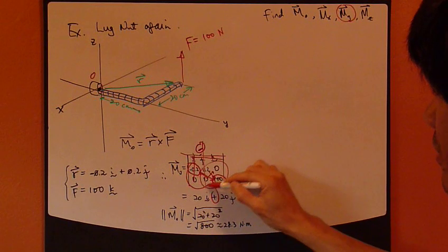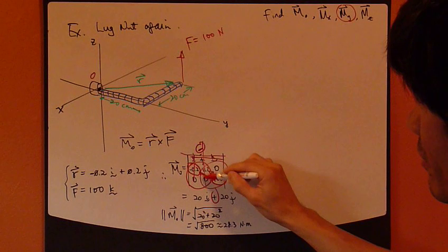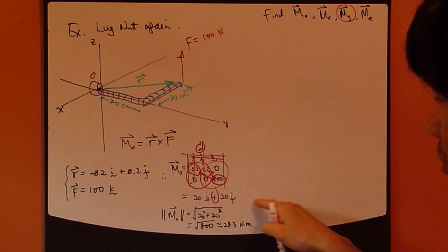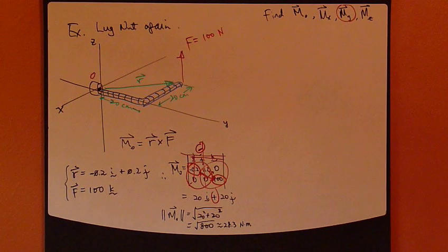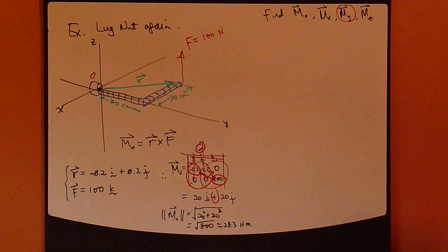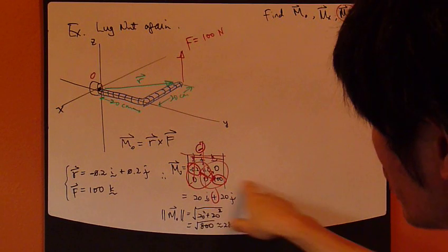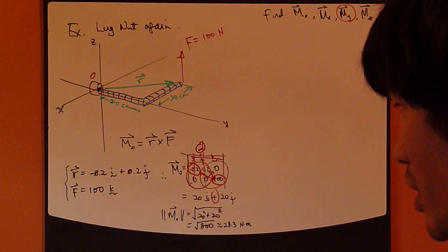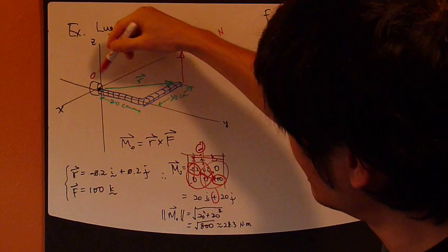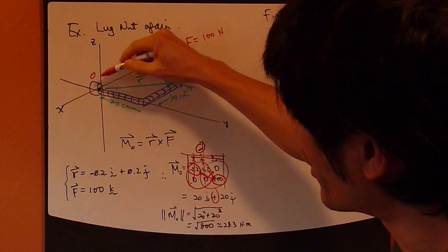And then for K, these four guys right here, but 0 and 0. So, 0K. Alright? So, we don't have 0, the K component of the moment about point O. So, the result is this, 20i plus 20j. So, that's your moment about point O.